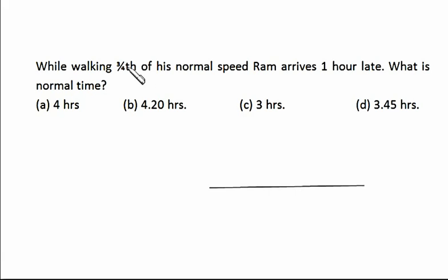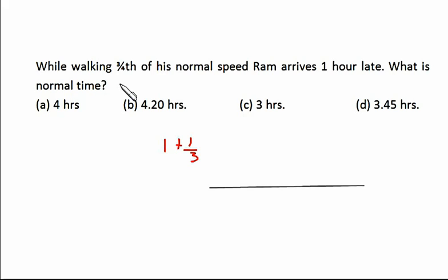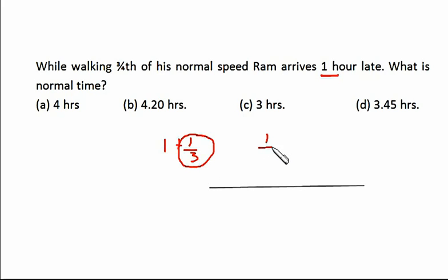So if he is walking at three-fourths of his normal speed, his time will be four-thirds of the normal. Four-thirds equals one plus one-third — we're working in fractions. If speed is three-fourths of normal, he takes four-thirds of normal time, which is one-third part extra from normal. Since speed is inversely proportional to time, he is taking one-third part extra.